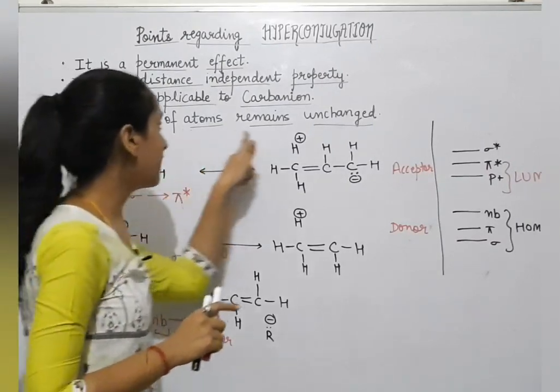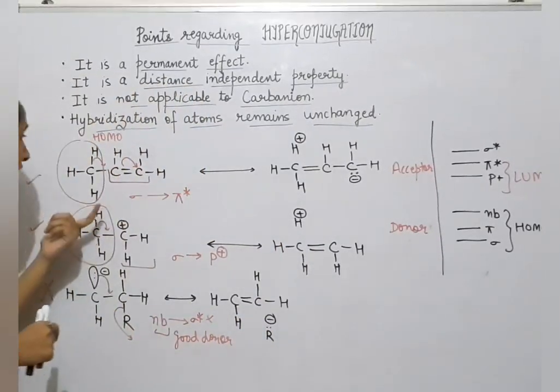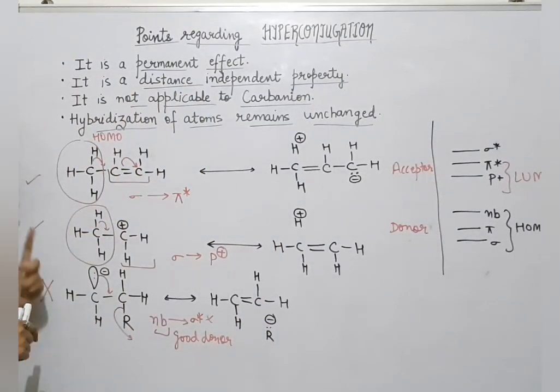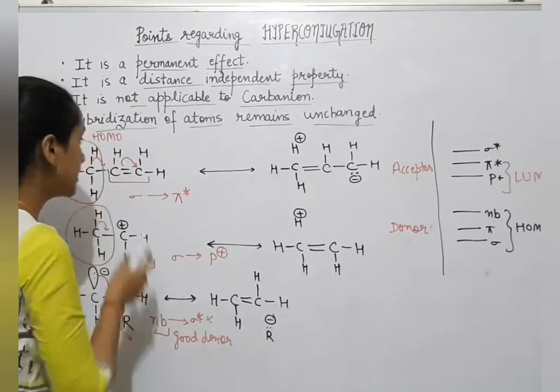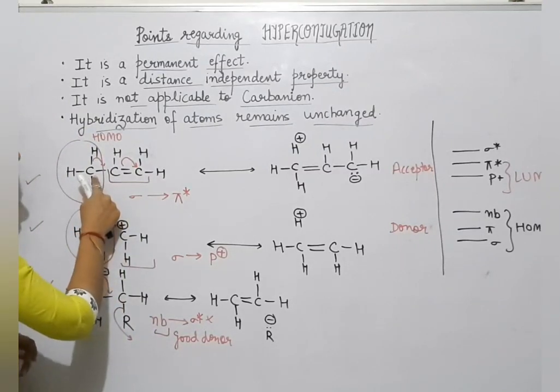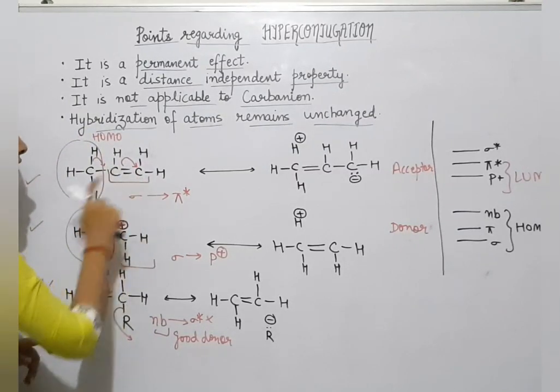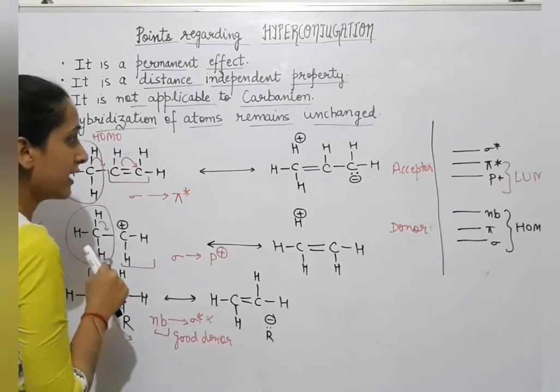Then, hybridization of atoms remain unchanged. Here, the hybridization of the atoms remain unchanged. Let's check: this carbon is sp3 hybridized, this carbon is sp2 hybridized.